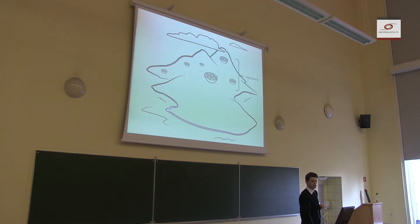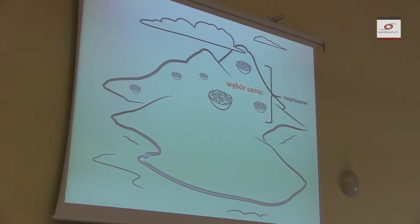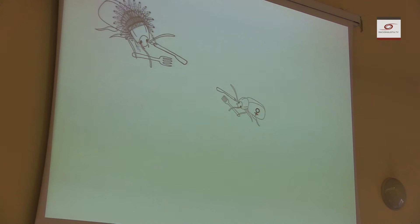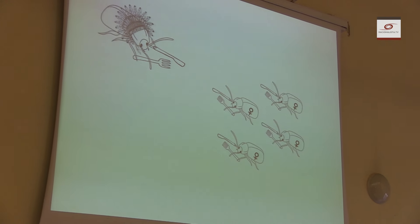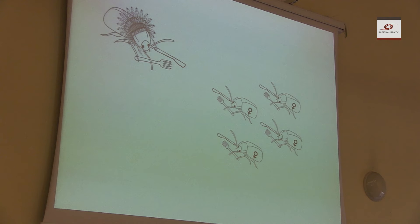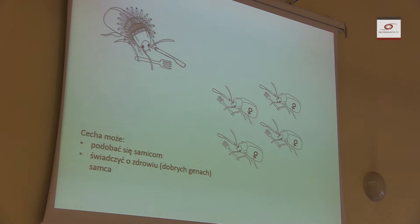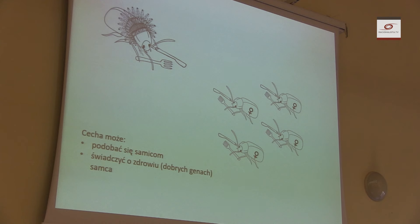Drugą sytuacją jest rozproszone źródło pokarmu, kiedy to samice zaczynają wybierać samce. Możemy wyobrazić sobie, że mutacja spowodowała u jednego z samców powstanie pióropusza, czyli cechy preferowanej przez niektóre z samic. Samice podchodząc do takiego samca, który będzie w jednym miejscu pokazywał swoje cechy, będą bądź się im podobała dana cecha samca, czyli na przykład pióropusz. Ewentualnie ten pióropusz może świadczyć o dobrym zdrowiu osobnika, ponieważ jest w stanie utrzymać taki ornament płciowy.